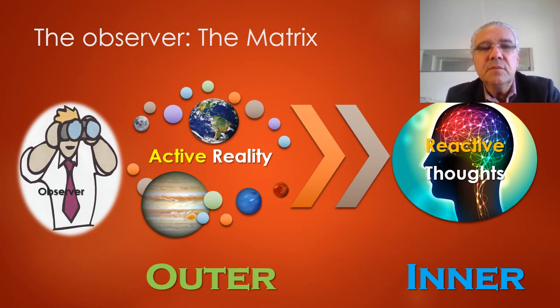So if we look at what we're going to call the matrix version of the role of the observer, which is the way that we've been educated to conceive of our interaction with reality. Then the observer is us, and we observe reality. So reality is outside, we observe reality, and in return reality is shaping in this direction here, is shaping our thoughts. So our thoughts are reactive, and we are reacting to what we perceive outside. That's the matrix version.